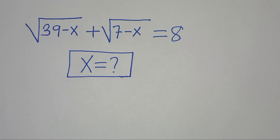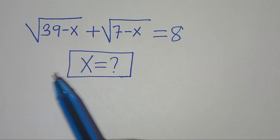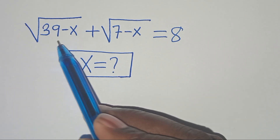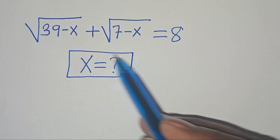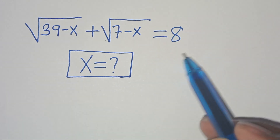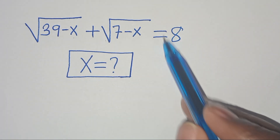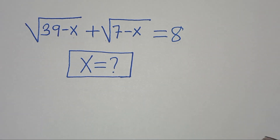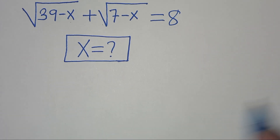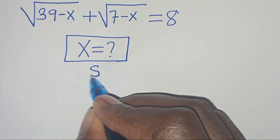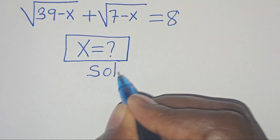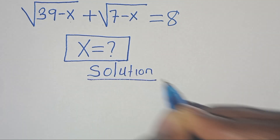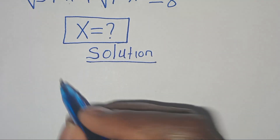You are welcome to solve this nice square root math problem: the square root of 39 minus x plus the square root of 7 minus x equals 8. What is the value of x? We are going to solve this by applying two methods.